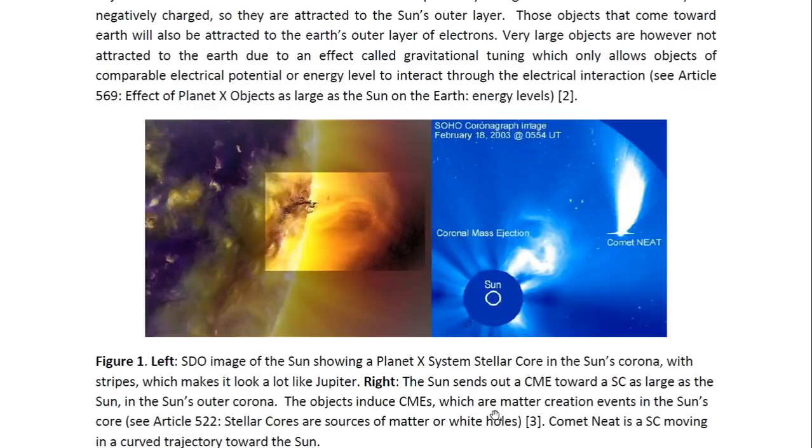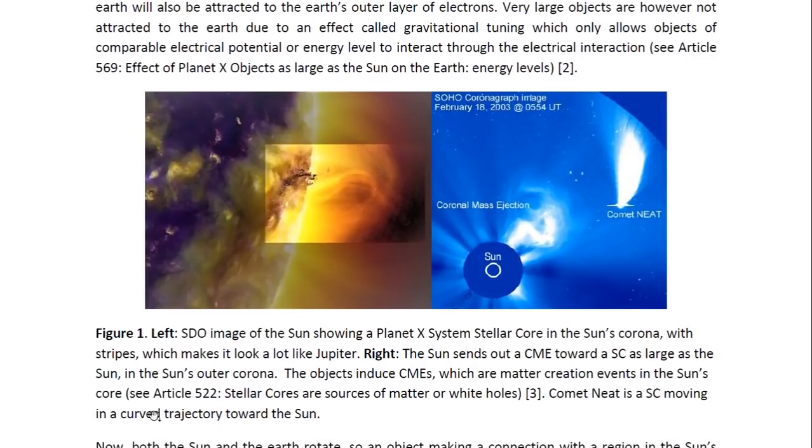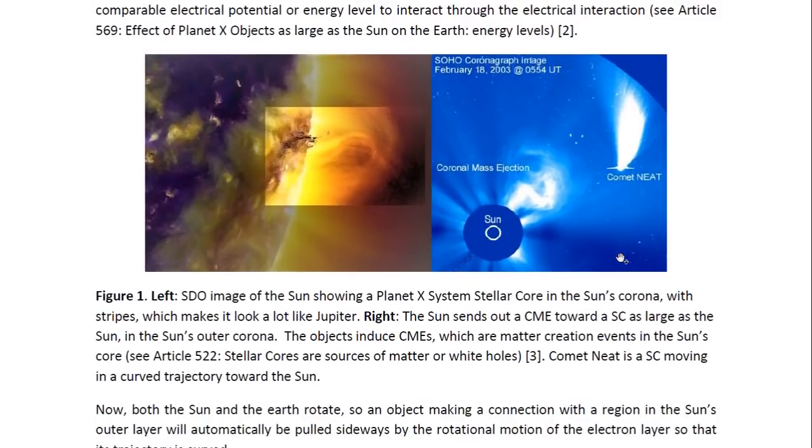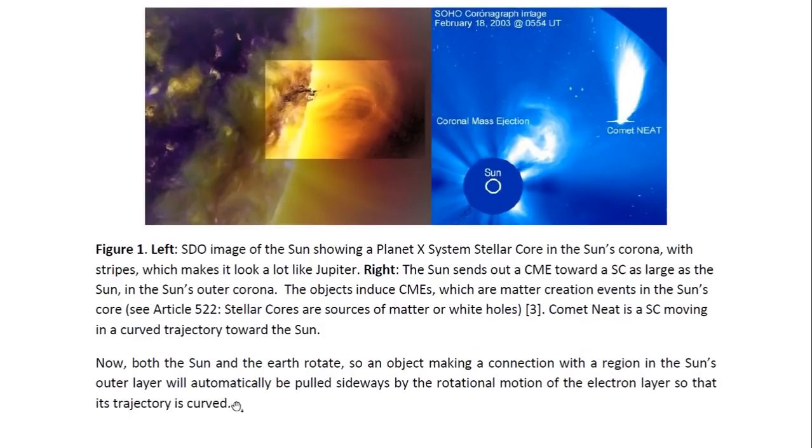There's a CME coming from the Sun, obviously connecting with the object. These objects induce CMEs, which are matter creation events in the Sun's core. For more details, you may look at Article 522, Stellar Cores or Sources of Matter or White Holes. Here you see Comet NEAT, which would be either one of these stellar cores coming in towards the Sun or debris that belongs to the debris fields around these objects. And we know these comets follow curved trajectories.